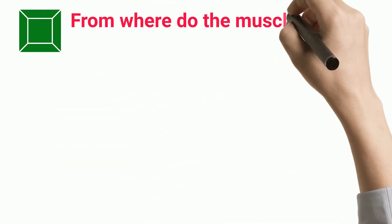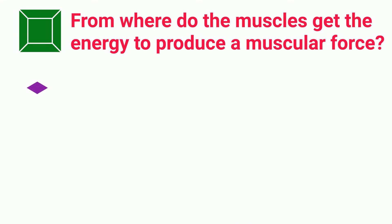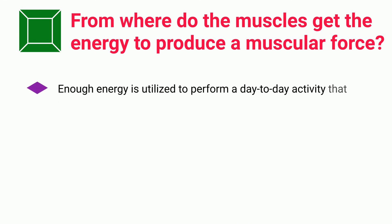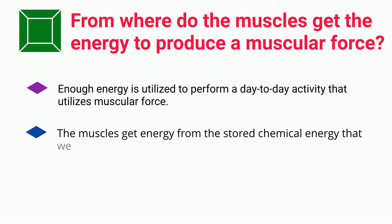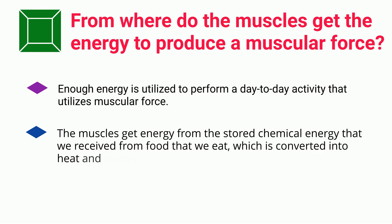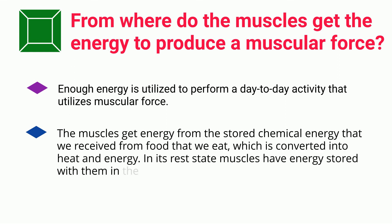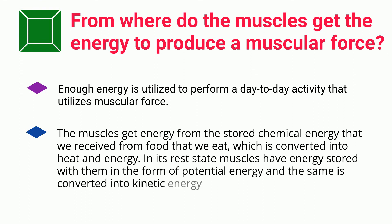From where do the muscles get the energy to produce muscular force? Enough energy is utilized to perform day-to-day activities that use muscular force. Muscles get their energy from stored chemical energy received from the food we eat, which is converted into heat and energy. In their rest state, muscles have energy stored as potential energy, which is converted into kinetic energy during the motion of a body.